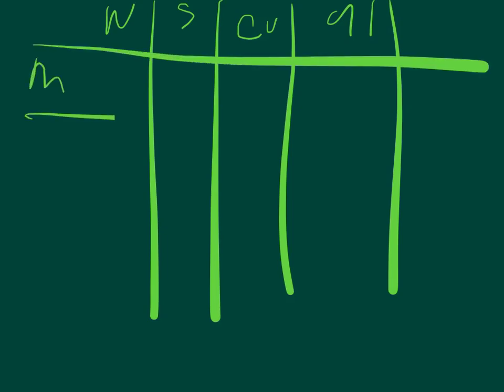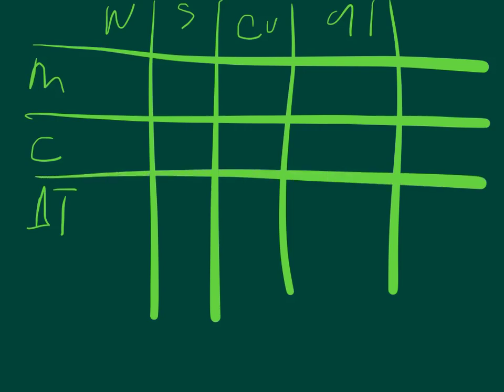And then we want to know the mass. So the mass of each one of these things. Let's just go through and write down everything that we're going to need. The change of temperature is the important thing. The water starts at 25 and it ends at 25.